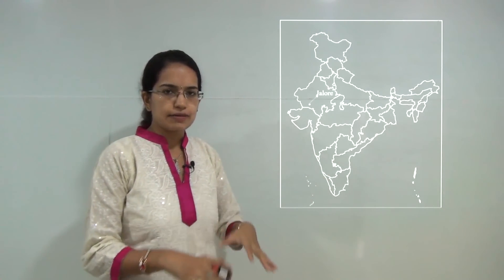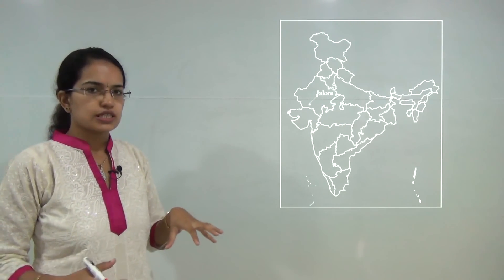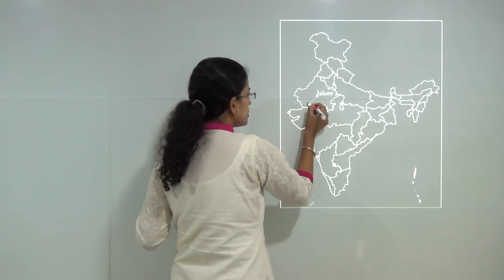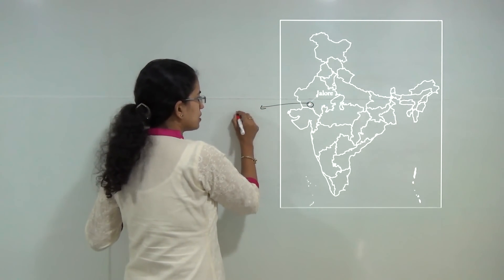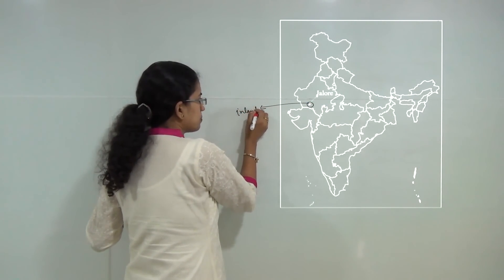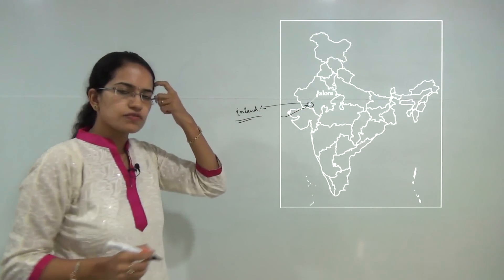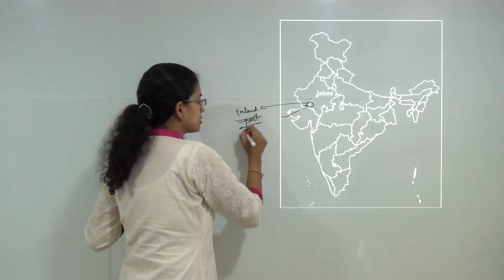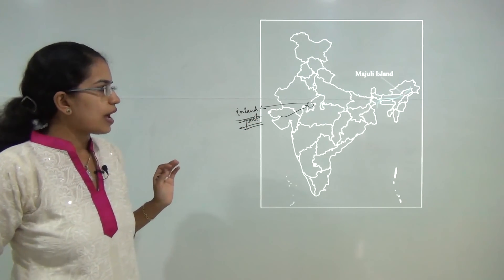Moving back to all the contemporary topics. You have Jalore. Jalore was in news recently because it is being discovered with a possibility to develop the first artificial inland port. This port has an idea to bring waters from Arabian Sea through Gujarat to the regions of Rajasthan. So it is the first artificial inland port in the state of Rajasthan.